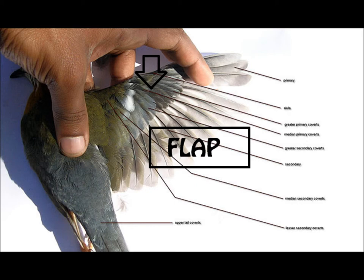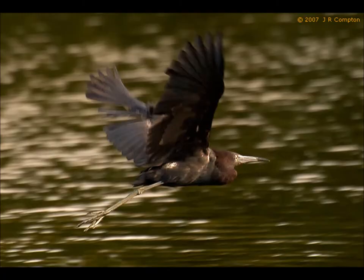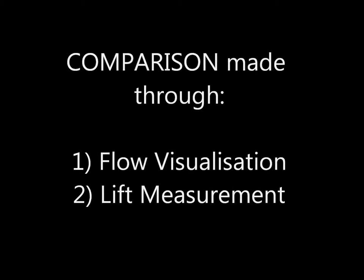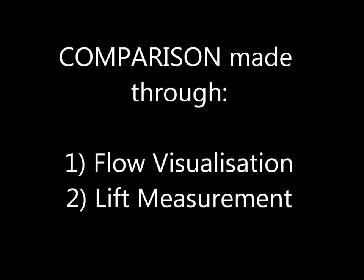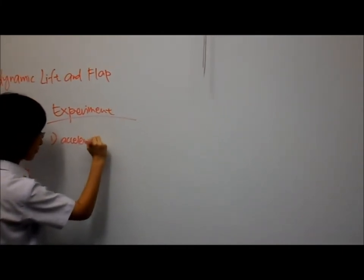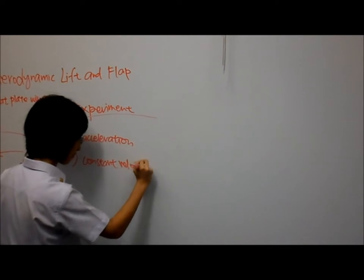This research aims to investigate the effect of the flap on the detachment of the vortices on a flat plate. Comparisons were made between a flat plate with and without a flap attached through flow visualization and measurements of lift. The plate is moved with both acceleration and constant velocity to compare how the effect of the flap would affect the lift in different motions.